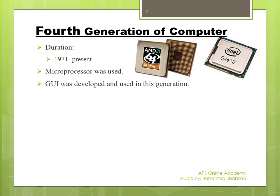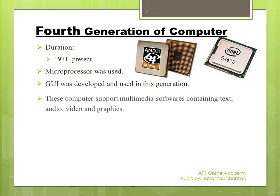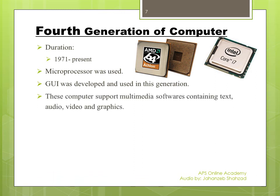GUI — Graphical User Interface — was developed and is used in this generation. GUI refers to windowed operating systems like Windows 10 and Windows XP. These computers support multimedia software containing text, audio, video, and graphics. Examples of multimedia software include Adobe Photoshop and Adobe Illustrator, in which you are able to make different types of images and create videos.